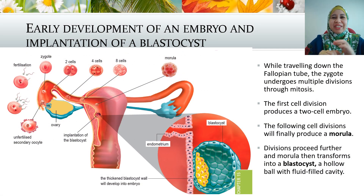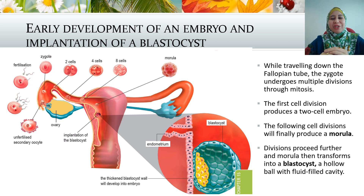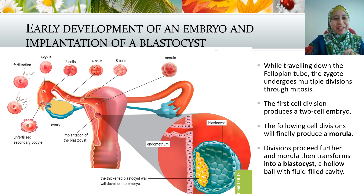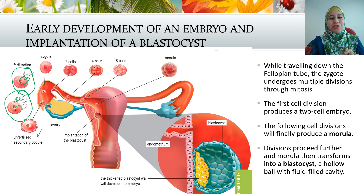After fertilization takes place, forming the diploid zygote, we see how it develops from there. This was the unfertilized secondary oocyte. The sperm tries to penetrate, and once it does, that is the fertilization process, forming a diploid zygote. While traveling down the fallopian tube, the zygote will undergo multiple divisions — mitosis.